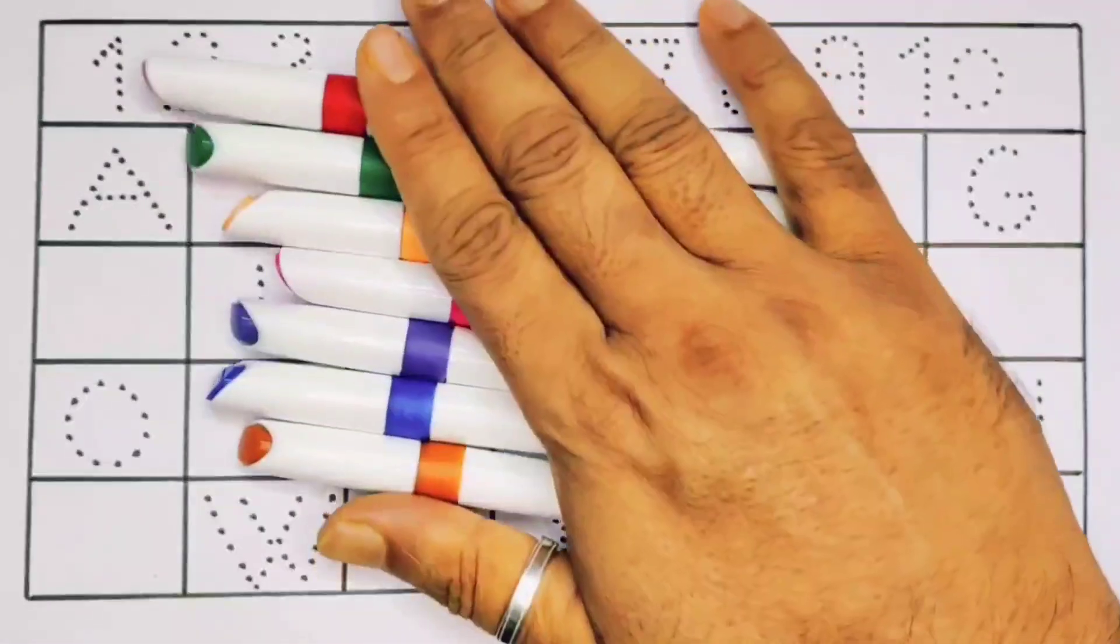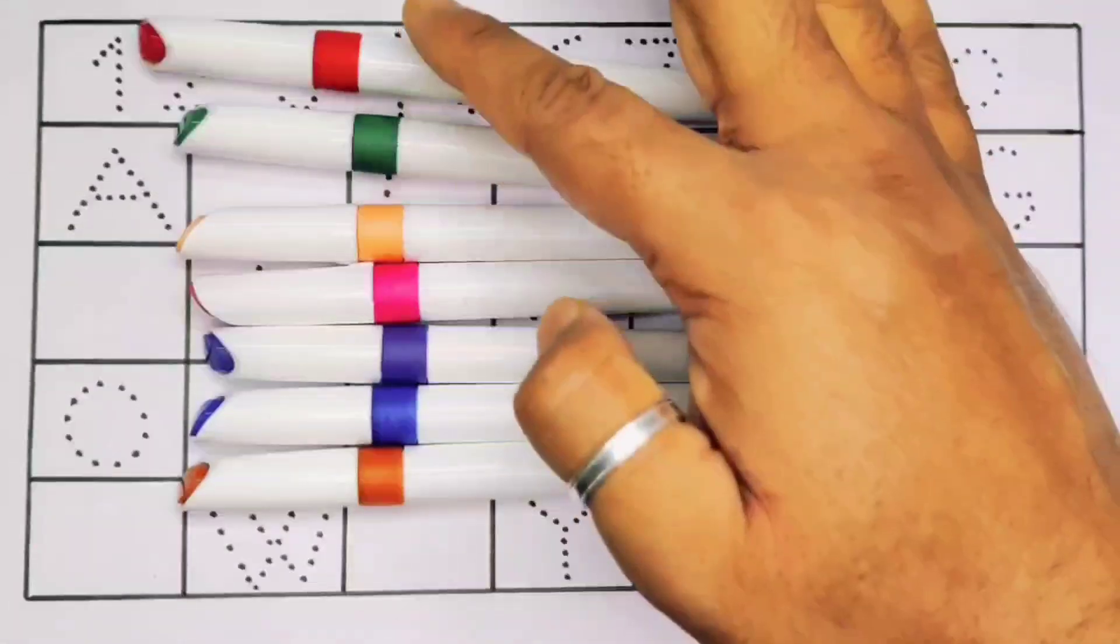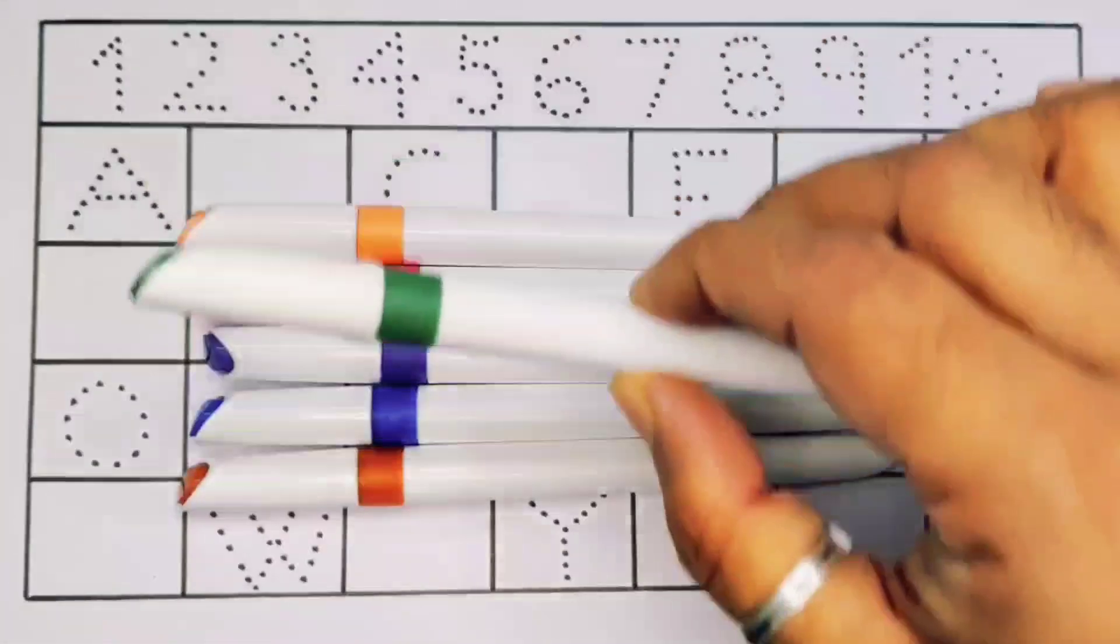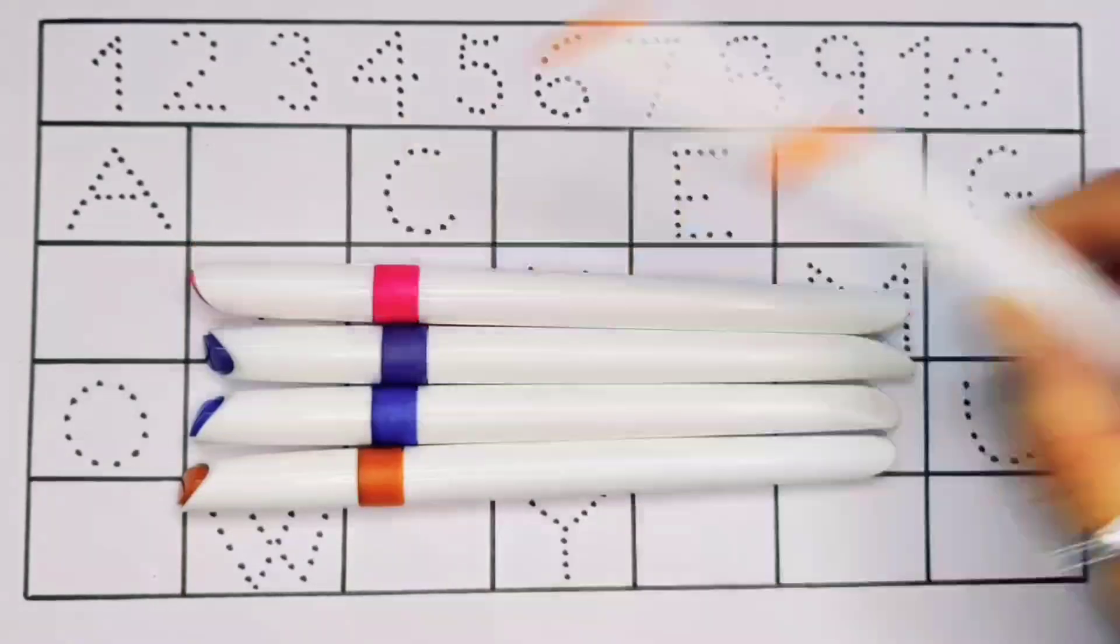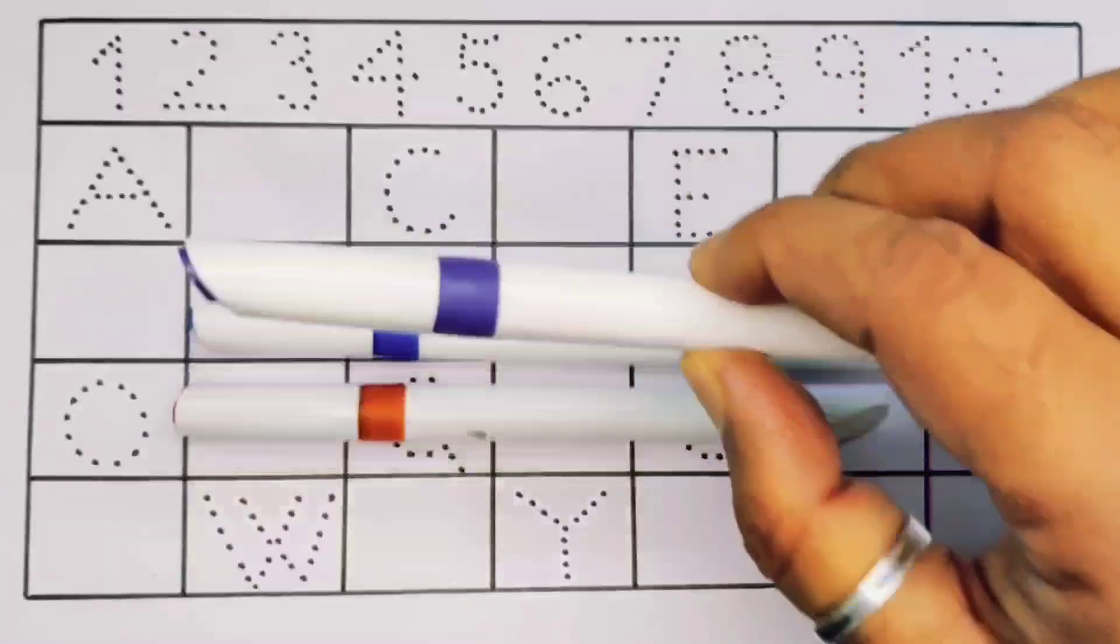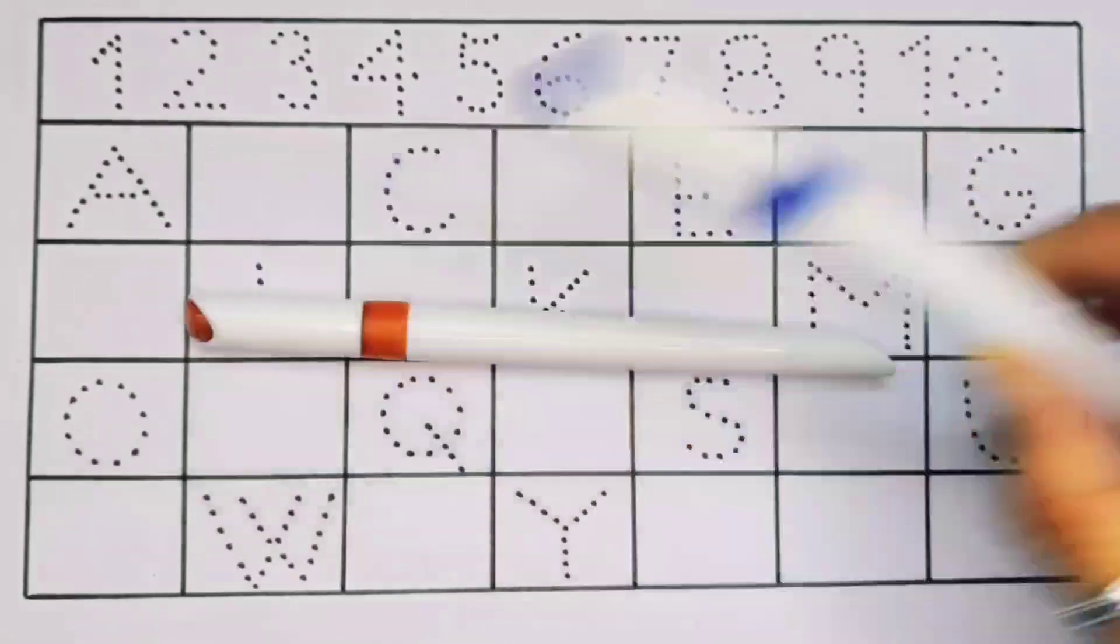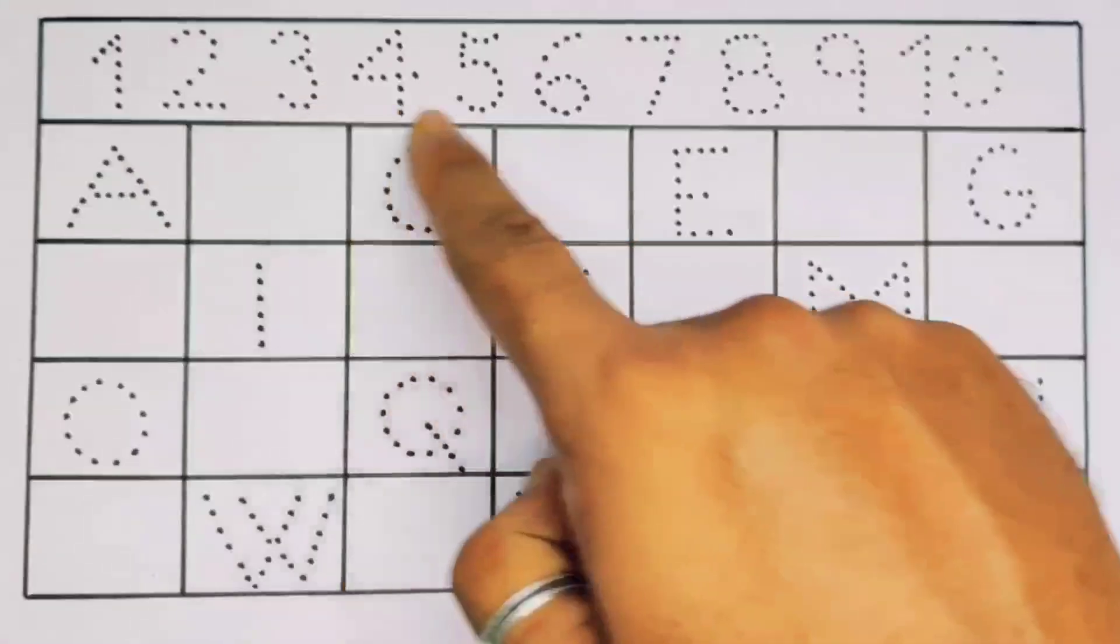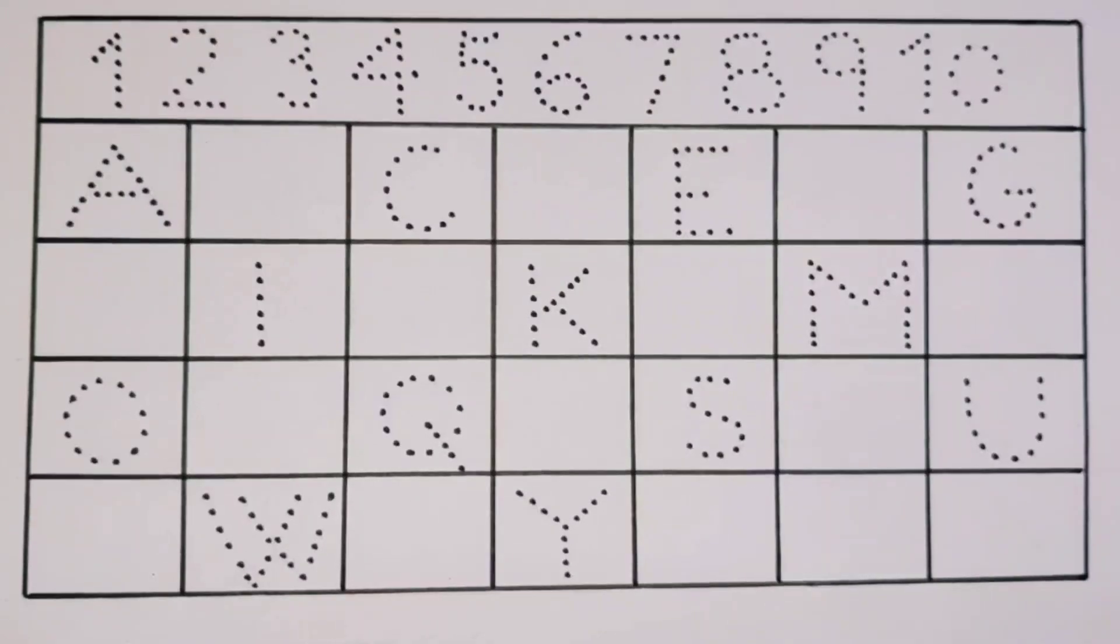Hello kids, welcome to my new video. First we are going to learn the colors: red color, green color, orange color, pink color, purple color, blue color, and brown color. Now let's learn the numbers counting one to ten and alphabet A to Z.